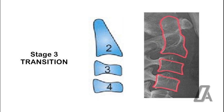Stage 3, Transition. There is acceleration of growth to peak height velocity. Marked concavities are seen in inferior borders of C2 and C3, and the body is rectangular in shape. A concavity begins to develop on the inferior border of C4. 25-65% of growth is left.